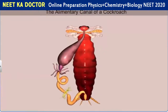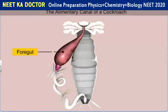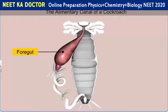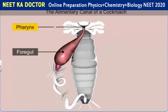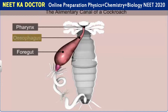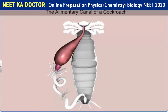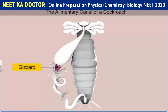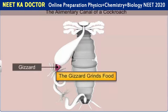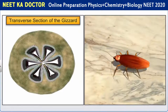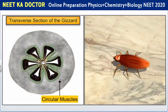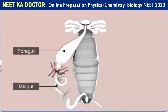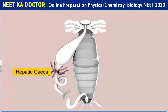The alimentary canal is present in the body cavity and is divided into foregut, midgut and hindgut. The entire foregut is lined with cuticle and consists of a mouth which leads into a short tubular pharynx that continues into a narrow tubular esophagus. The esophagus opens into a large sac-like structure called a crop which stores food. The crop is followed by a small conical gizzard or proventriculus which grinds the food particles. The transverse section of the gizzard shows an outer thick layer of circular muscles and an inner thick layer of cuticle which forms six chitinous teeth.